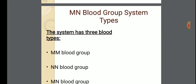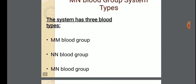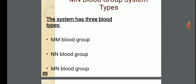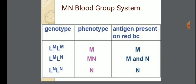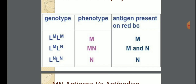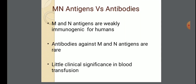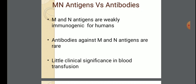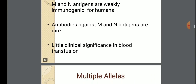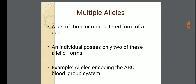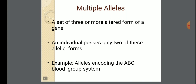In the MN blood group system, there are three blood types: M, N, and the combination MN. In the chart, genotype LM LM gives phenotype M, with antigen M present on the red blood cell — that is the M blood group. When both M and N antigens are present, the blood group is MN. M and N antigens are weakly immunogenic for humans. Antibodies against M and N antigens are rare, with little clinical significance in blood transfusion. Multiple alleles are a set of three or more altered forms of a gene; an individual possesses only two of these allelic forms.